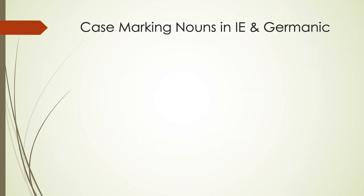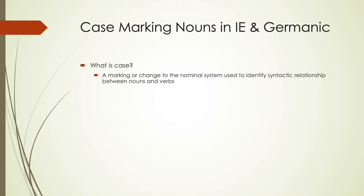Case is a concept that marks or changes the nominal system — nouns and adjectives — used to identify the syntactic relationship between different nouns and verbs in a sentence. In present-day English we mostly use word order to do that; we have to put words in a certain order to get the proper interpretation. But in many languages and in Old English and earlier forms, these morphemes would attach and give you that relationship, making sentence ordering less important.